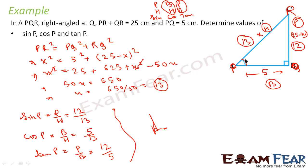In most questions, what we have to do is: first find the lengths of the sides of the triangle. If you are able to find the side lengths, you can find any trigonometric ratio. Here we assumed QR as X and PR as 25 minus X, used Pythagoras theorem to find X, and once we had all three sides, we could find all the trigonometric ratios.